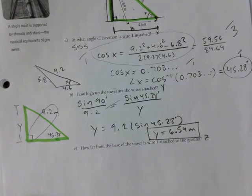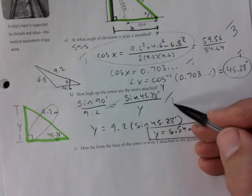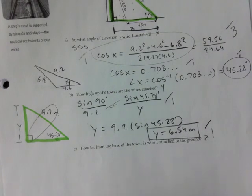So, sine of 90 over 9.2 is equal to sine of 45.28 over Y. Do some cross-multiplying and dividing magic. 6.54 meters. I would give you two marks for that. One here. One for final answer. So, two marks for that.